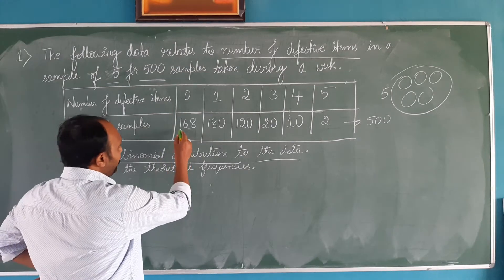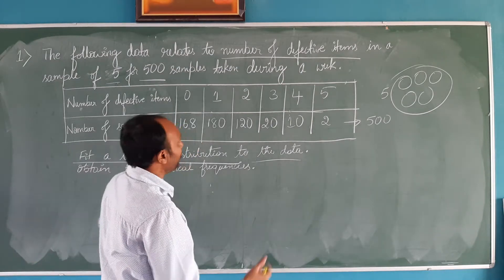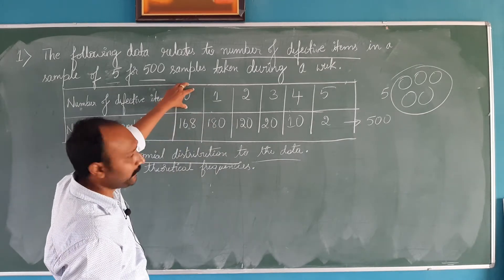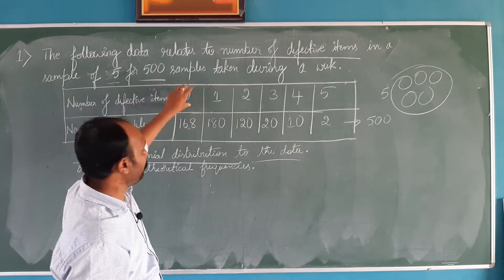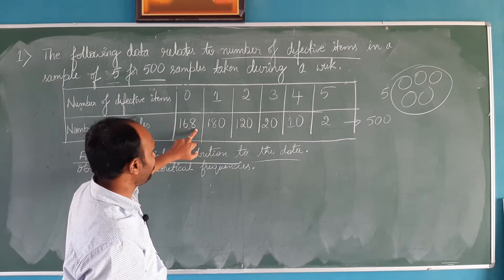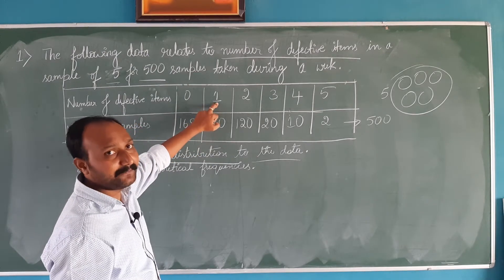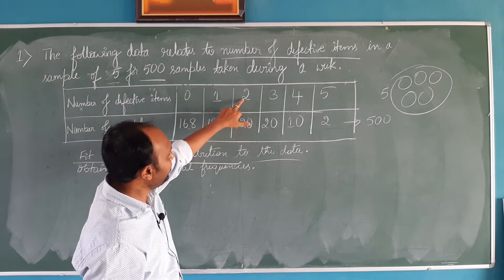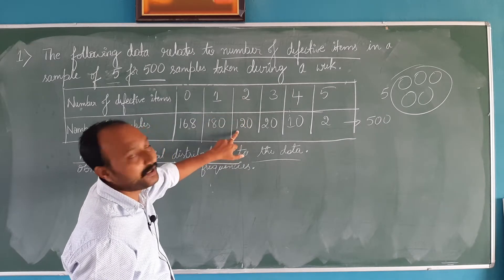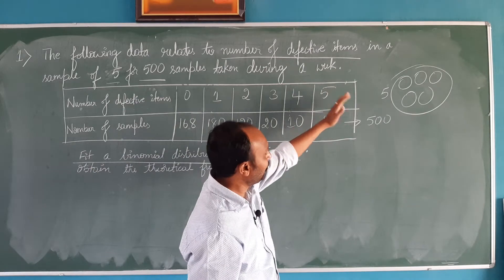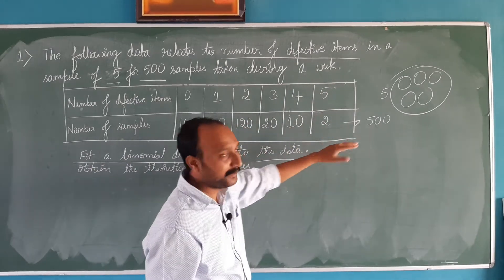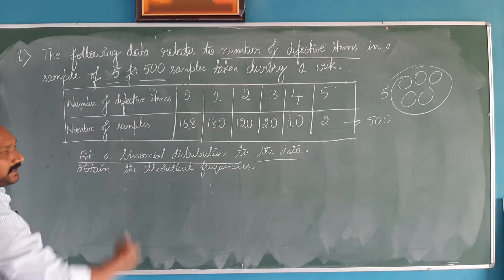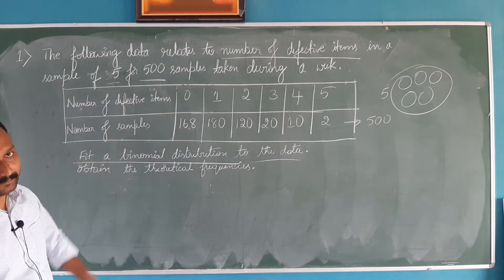There are totally 168 samples having 0 defective items. Similarly, there will be one defective item — how many such samples? 180 samples. For 2 defective items, how many such samples? 120 samples. Similarly, there are totally 500 samples and their number of defective items have been given. The table has number of defective items and number of samples.